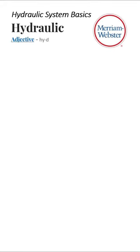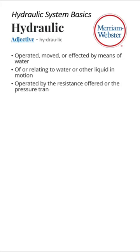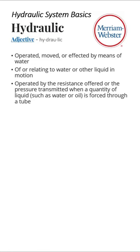Hydraulic system basics. Based on the Merriam-Webster dictionary definition, hydraulic means to be operated, moved, or affected by means of water or another liquid in motion. Another definition is that it's operated by the pressure transmitted when a liquid is forced through a tube or a pipe.